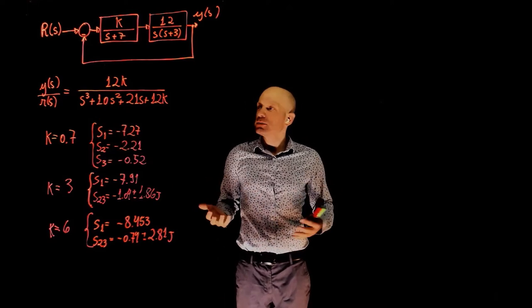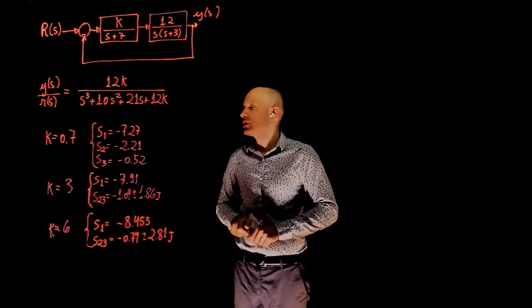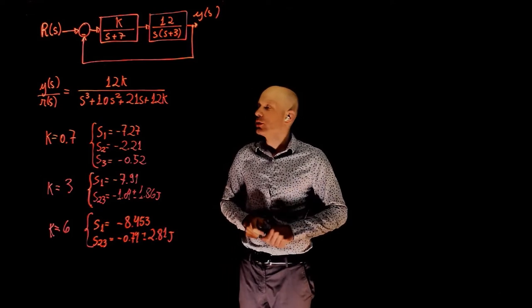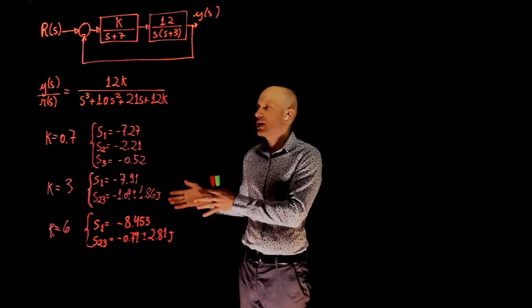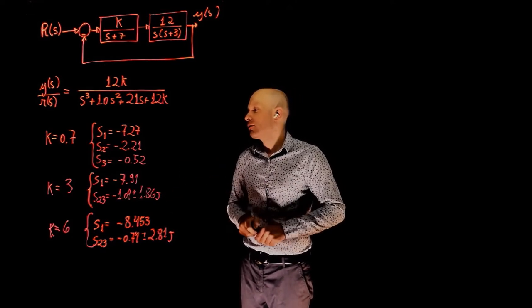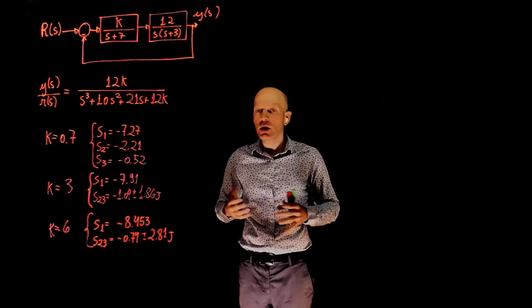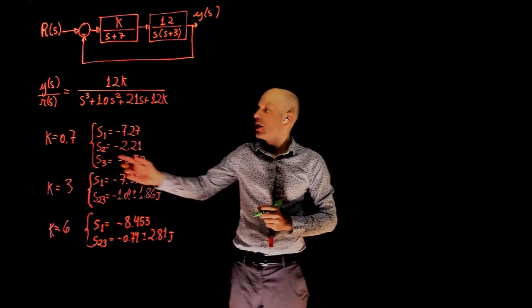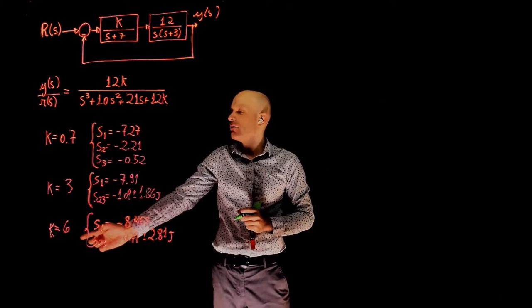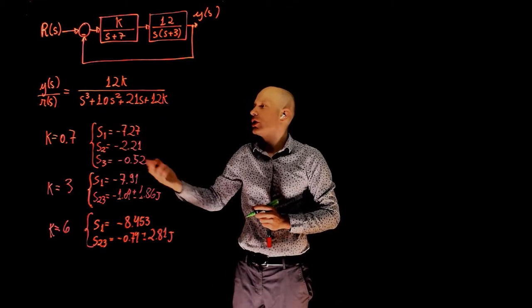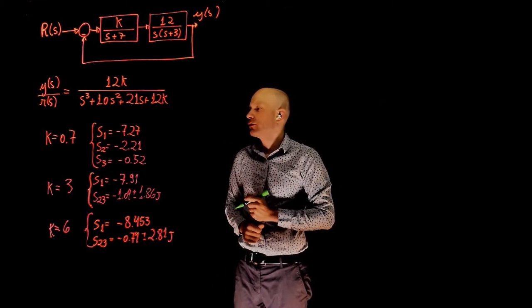The tools that we developed to calculate overshoot and settling time were derived from a second order differential equation. And the way you're going to approximate a second order transfer function from a third order is through the use of the concept of dominant poles. Now, let's look at the location of poles for different control gains. I went ahead and replaced K with the respective values here and found the roots of this polynomial, which are the poles of the transfer function.